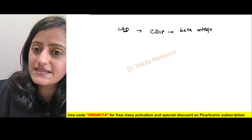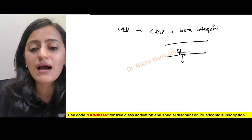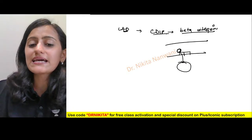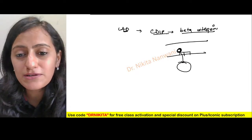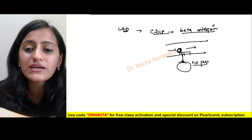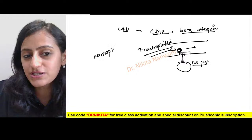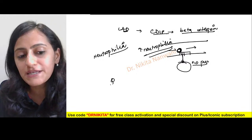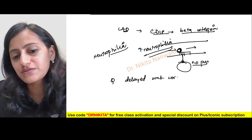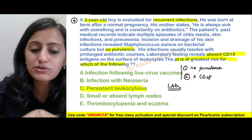In Leukocyte Adhesion Deficiency, CD18 (beta-2 integrin) is deficient. Beta-2 integrin helps WBCs attach to the endothelium so they can migrate to the infection site and form pus. Without CD18, WBCs cannot attach or exit the vessels — hence no pus (non-purulent infections). All WBCs remain in the blood, causing increased WBC count — neutrophilia, not neutropenia. Another important history: delayed umbilical cord separation.